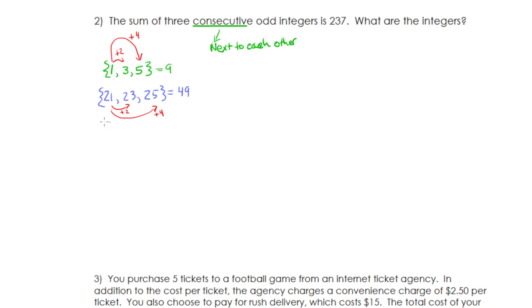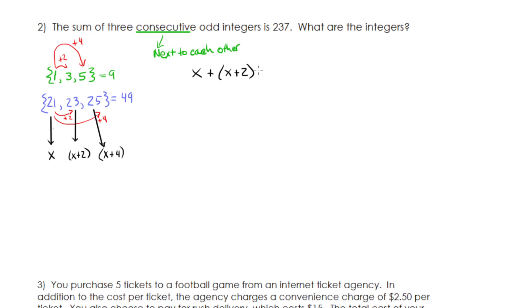So I can actually model my three consecutive integers by just calling this first one x, x plus two, and the third one is going to be called x plus four. And then I can have all my integers when I don't know what they are. So my equation here could be x plus x plus two plus x plus four equals 237.